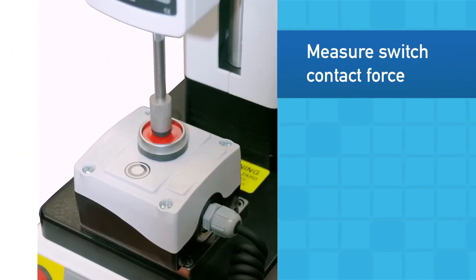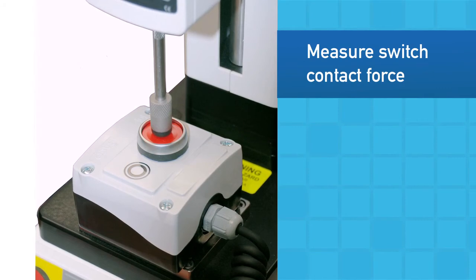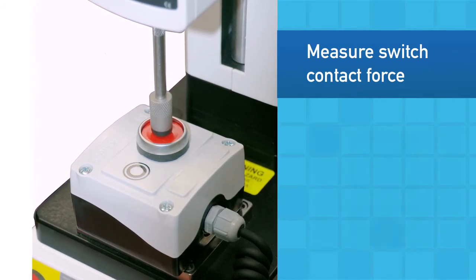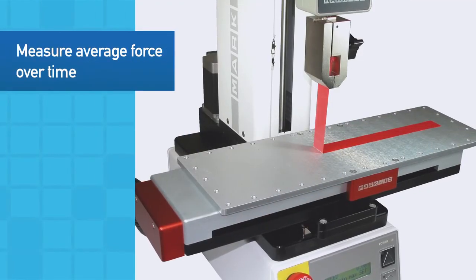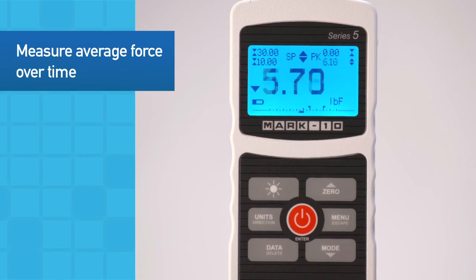The external trigger function is useful in measuring the force at which an electrical contact is made, such as switch testing. For certain peel tests and other applications, averaging mode calculates the average force over a specified period of time.